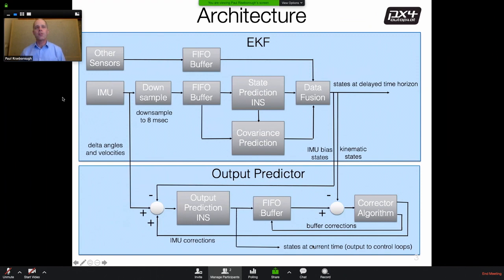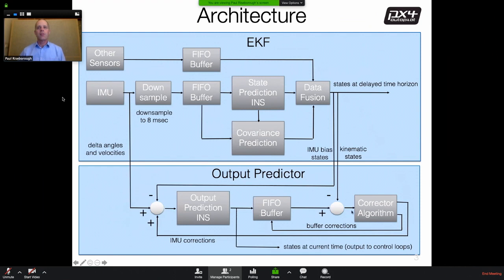These estimates are prevented from drifting because the output predictor tracks the output from the EKF at the EKF time horizon. In the data logs, the EKF states are in the estimator status message, while outputs from the predictor are in messages like vehicle attitude or vehicle local position. It is important to understand that the states logged in the estimator status message are delayed between 100 and 200 milliseconds from real time.